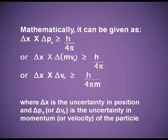Any instrument or technique we apply: if we want to measure accurate velocity, then the position will be changed; and if we find out the position, the velocity will be changed. Mathematically, Heisenberg's uncertainty principle is: delta x times delta p is greater than or equal to h divided by 4 pi. Or we can write delta x times m delta v is greater than or equal to h divided by 4 pi.